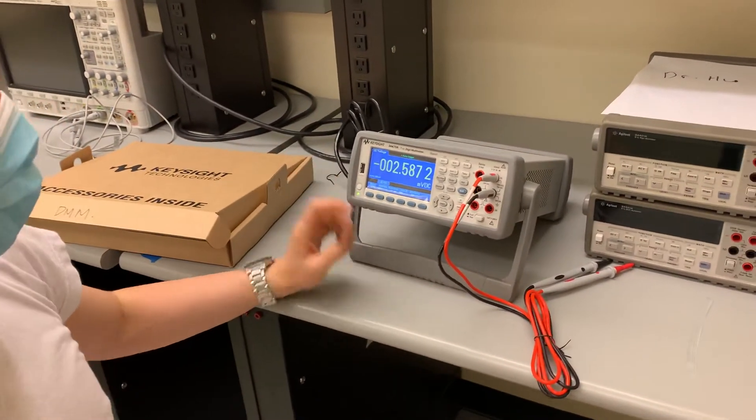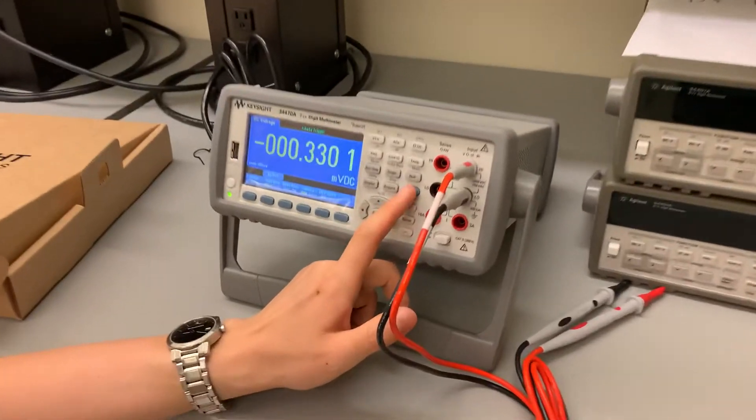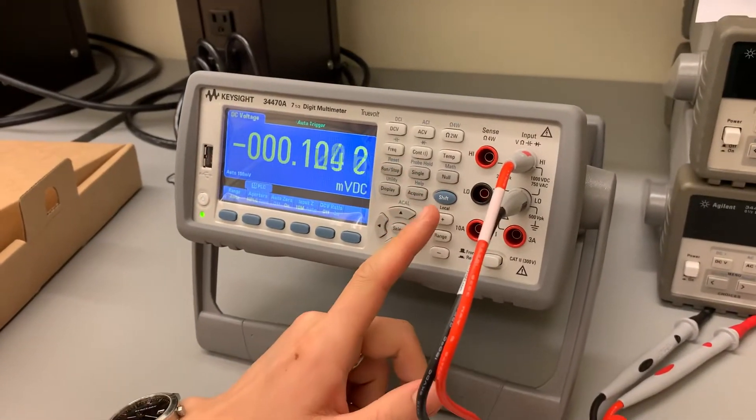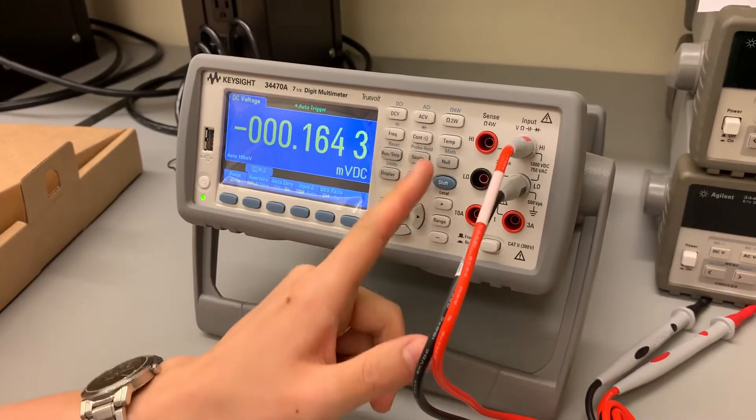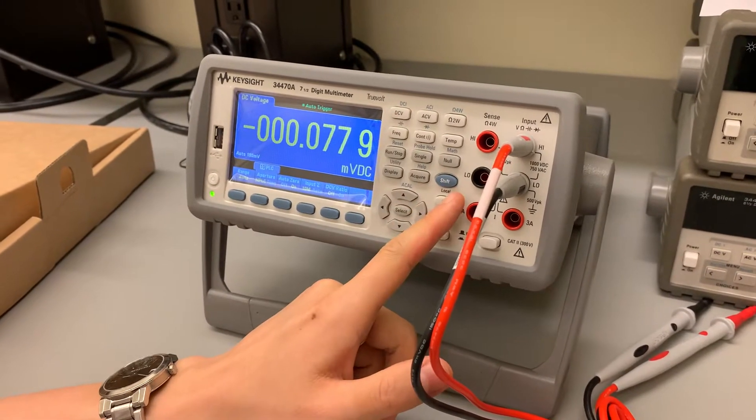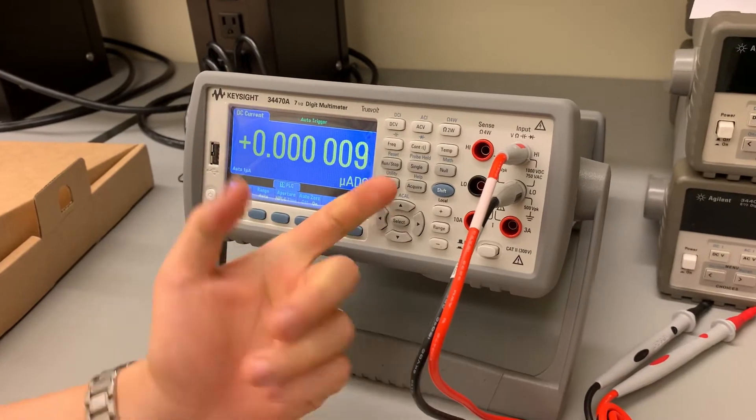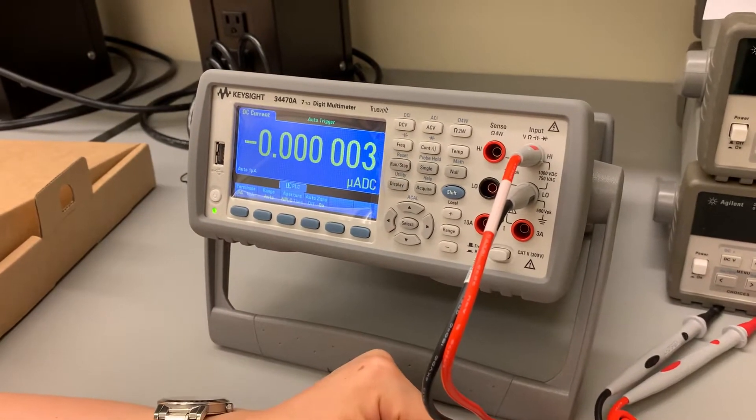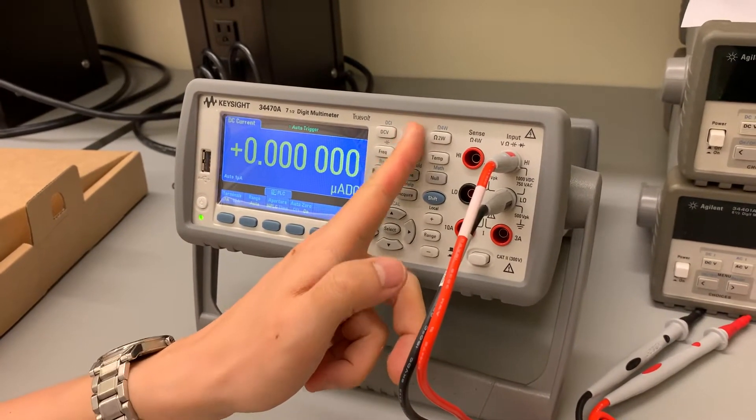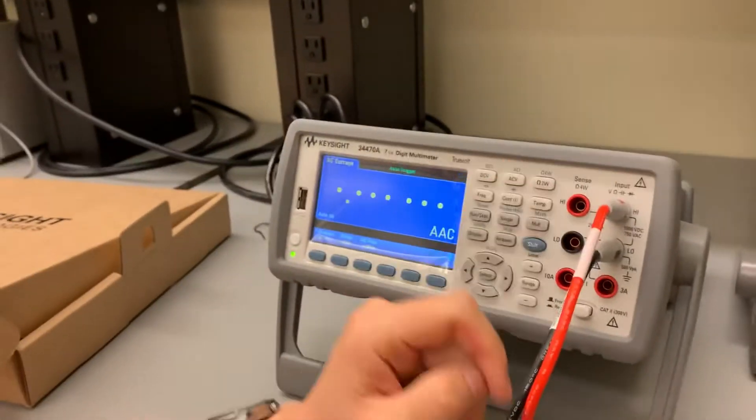And once it's turned on, the key thing here is this shift button. So normally, by default, it's voltage, and then you can always shift it to be current measurement by pressing shift DCI. And we automatically adjust for the range. Of course, we can also do AC voltage and AC current.